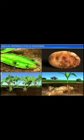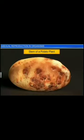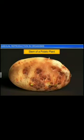In higher plants, asexual reproduction, commonly known as vegetative propagation, takes place through vegetative propagules — specialized structures which emerge from different parts of the plant. For instance, the stem of a potato plant is dotted with buds known as eyes, which later germinate into new plants.